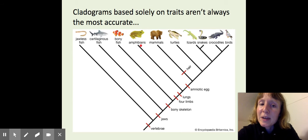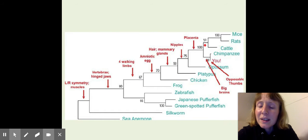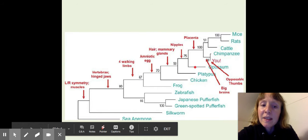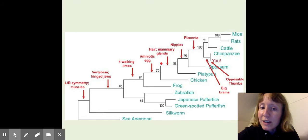Cladograms are not always the most accurate. For example, in this one, the mammal is shown right here, branching off before turtles or reptiles. Whereas if we look at this phylogenetic tree that has a lot of the same traits shown, you'll see that it's more accurate showing mammals branching off later on.